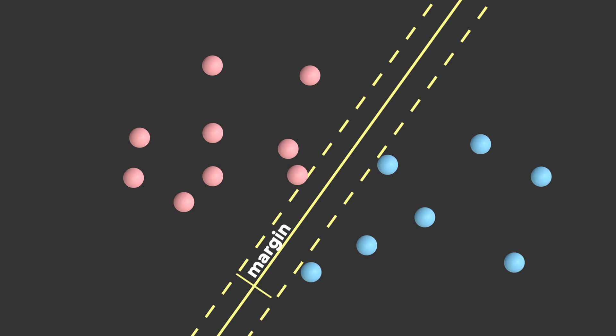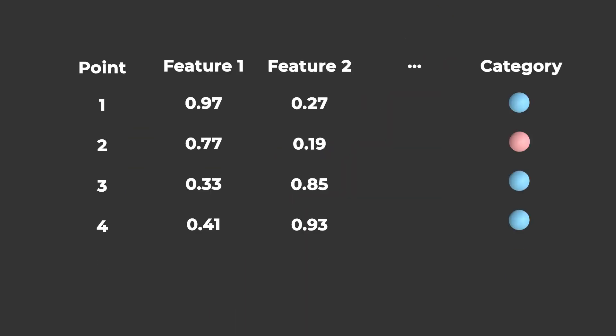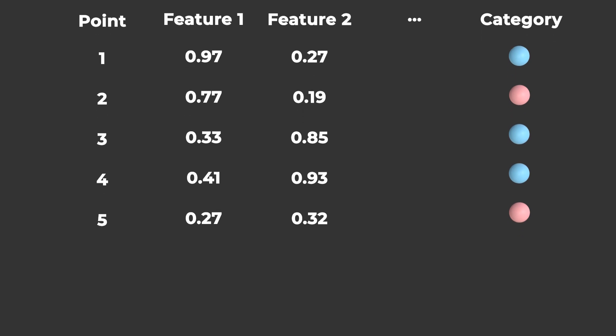To find this hyperplane in the first place, SVM requires a training set, or a set of points that are already labeled with the correct category. This is why SVM is said to be a supervised learning algorithm.